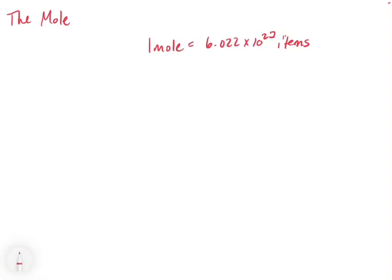The reason why I write 'items' is because this can be fairly general. Typically this refers to something like atoms, molecules, or ions, but in essence you could have something like a mole of basketballs — that would be a ridiculously large number of basketballs, but it makes sense.